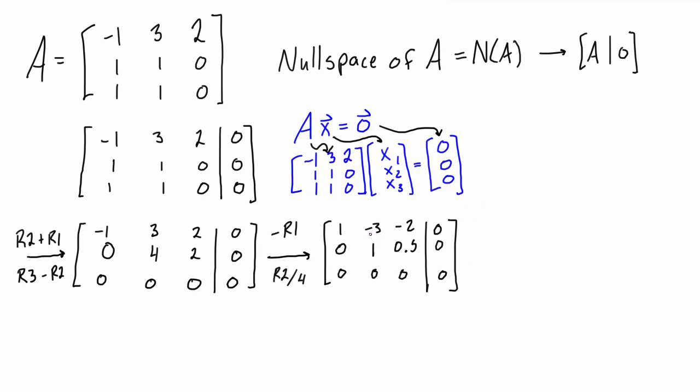There's one more step we can do here - we can get rid of this entry, so we'll have row one plus three times row two. So we get one plus three times zero is one, negative three plus three times one is zero, and negative two plus three times 0.5, so that's negative two plus 1.5, that is negative 0.5. The last one is still zero and then everything else is unaffected, so we have positive 0.5, zero, and then that last row of zeros.